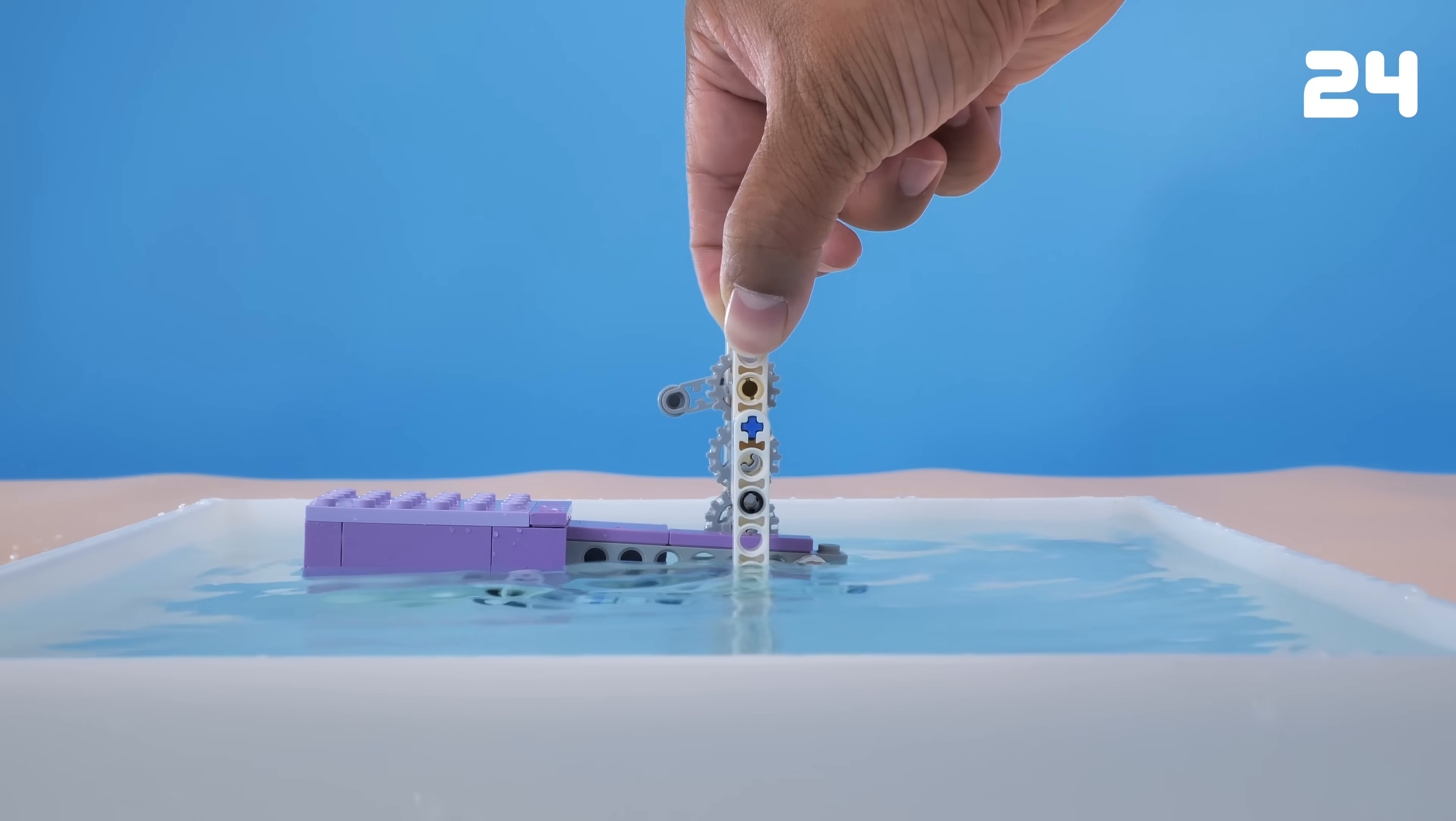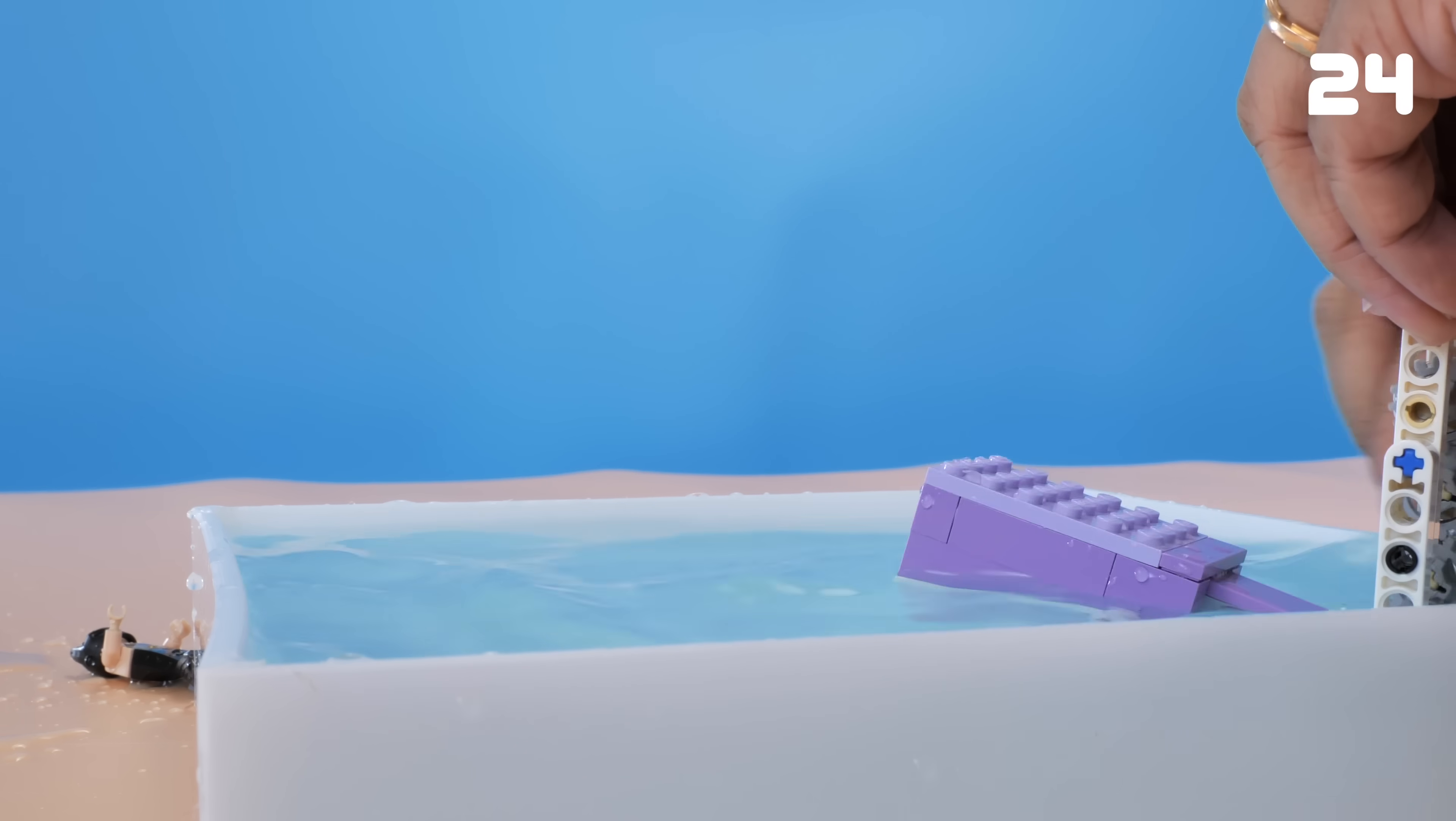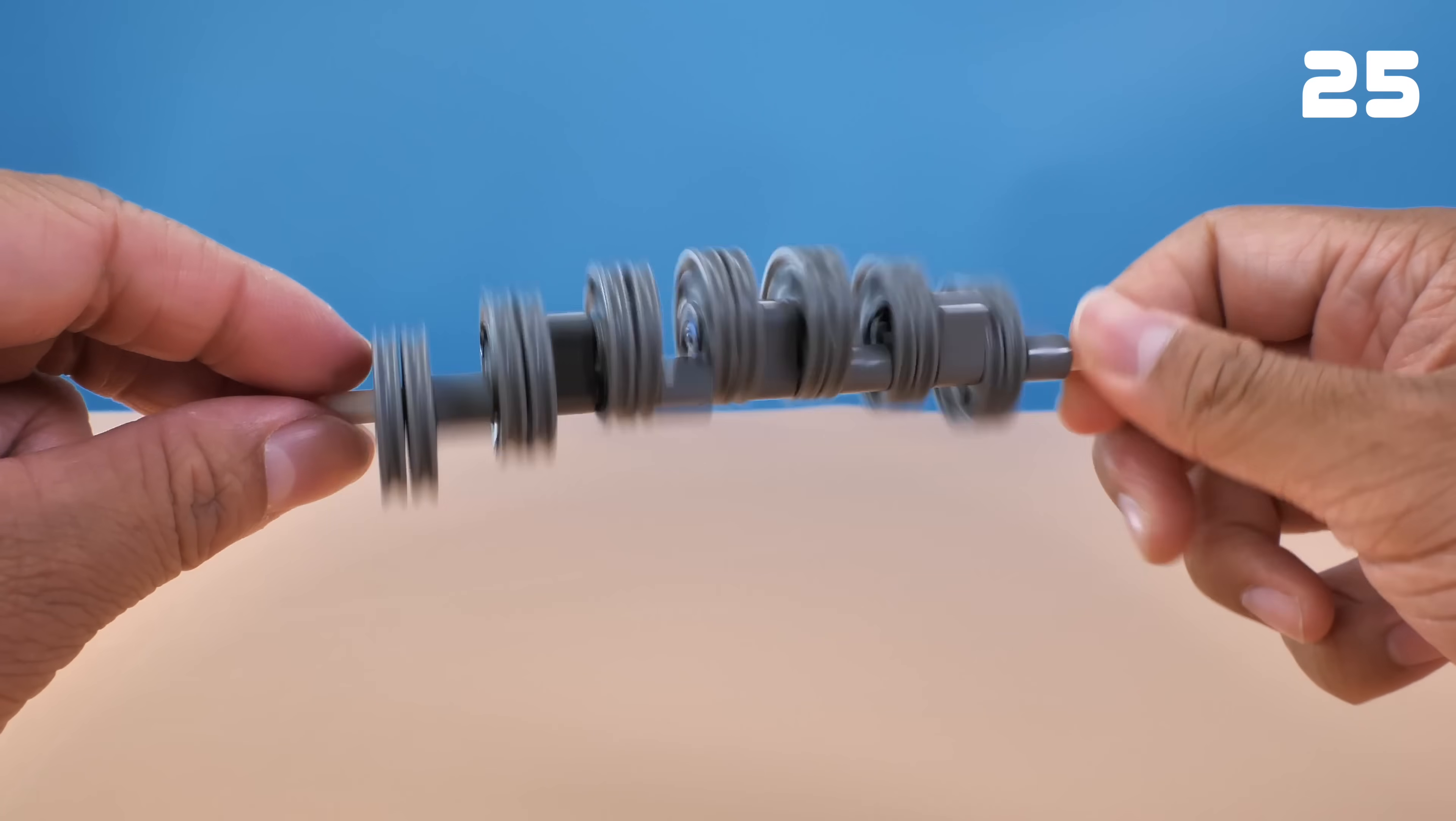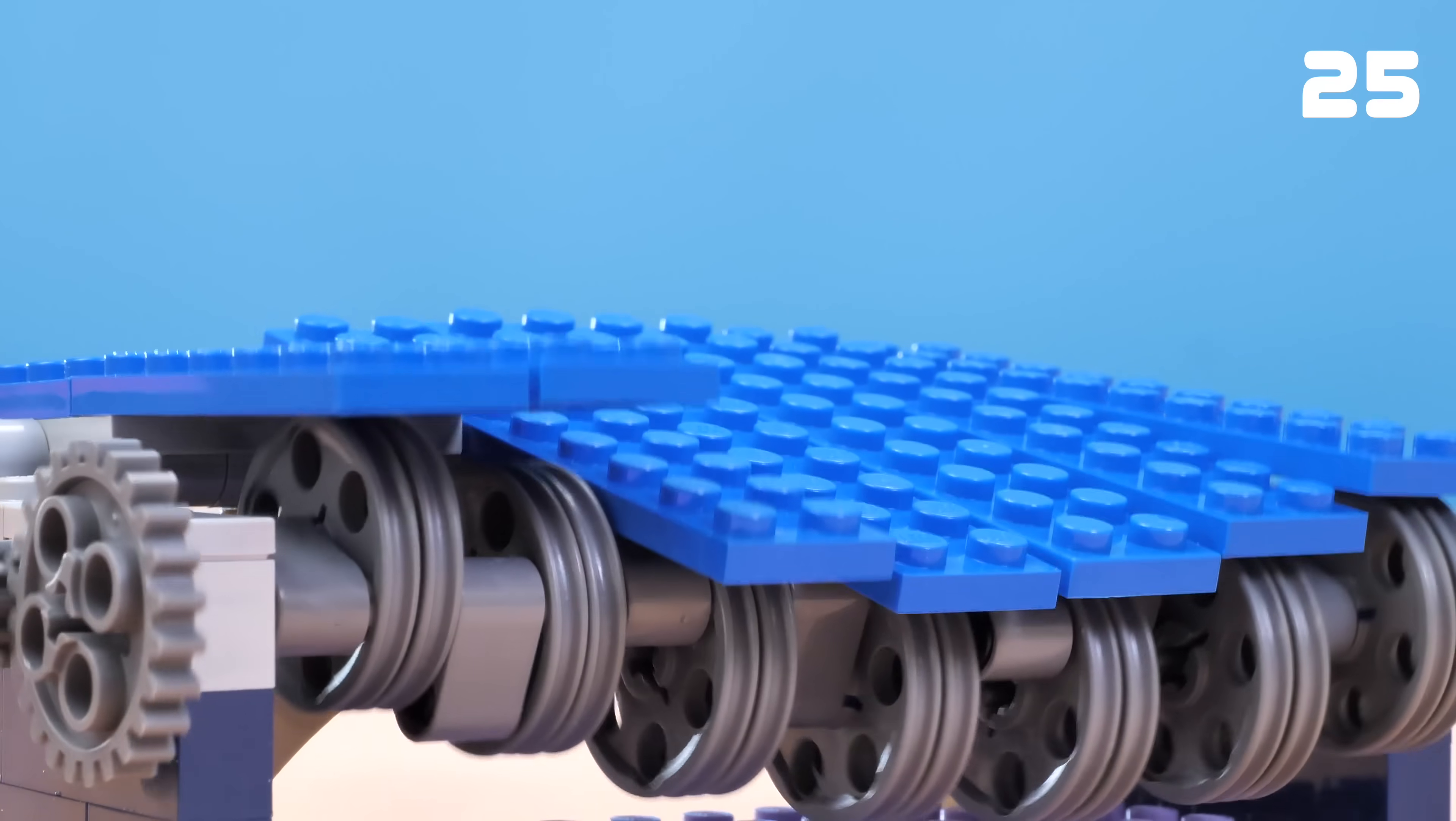LEGO has a lot of unexpected functions. You can even make a squirt gun with pure LEGO bricks. It sucks and ejects water as you spin the knob. If there is no water, we can even create water with LEGO bricks. I mean, with this mechanism, the blue plates are just like the waves in the ocean.